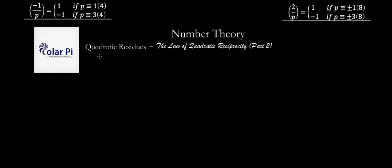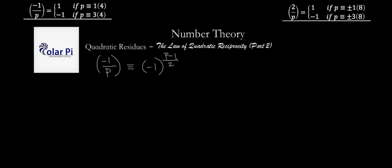So with this said, let's look at (-1/P). The analysis for this is pretty straightforward because to start, we know that this has got to be congruent to (-1)^((P-1)/2) by Euler's criterion, and it's got to be congruent to this mod P. But we know that P has to be an odd prime. And we also know that every odd integer can be written of the form...